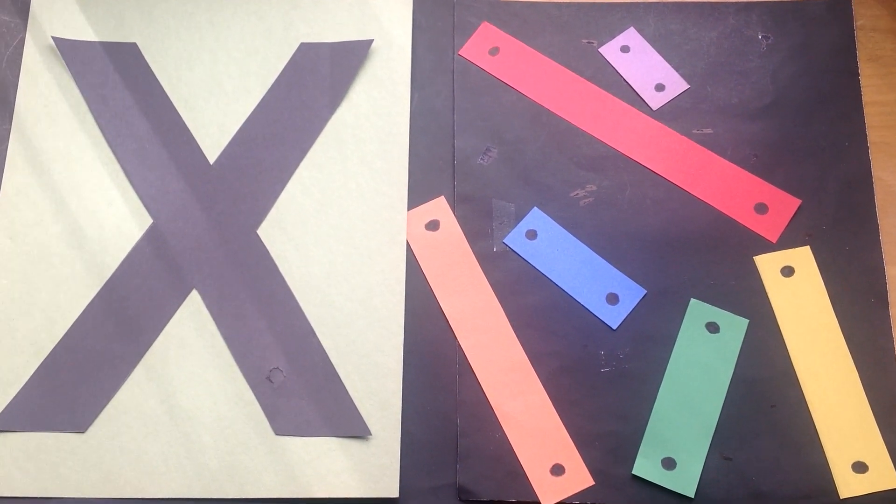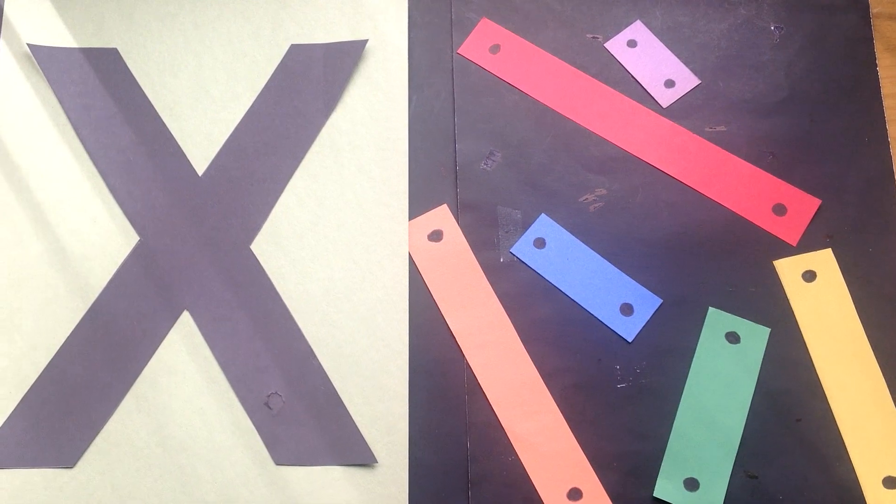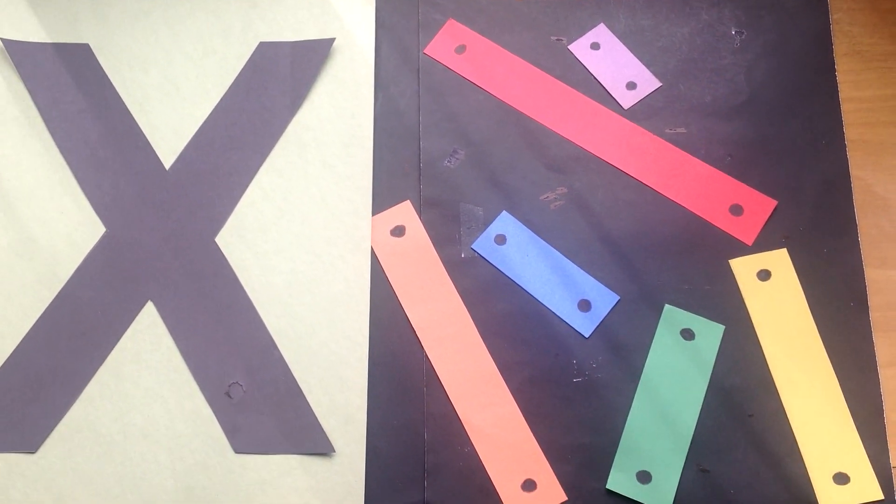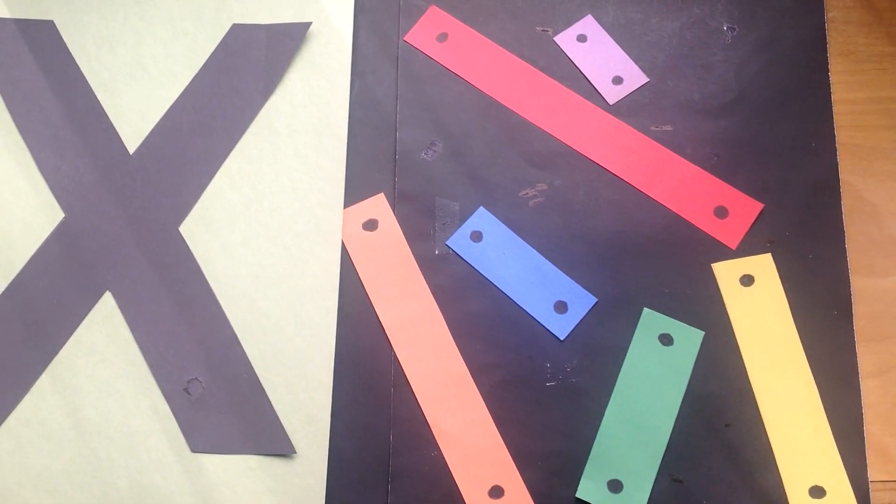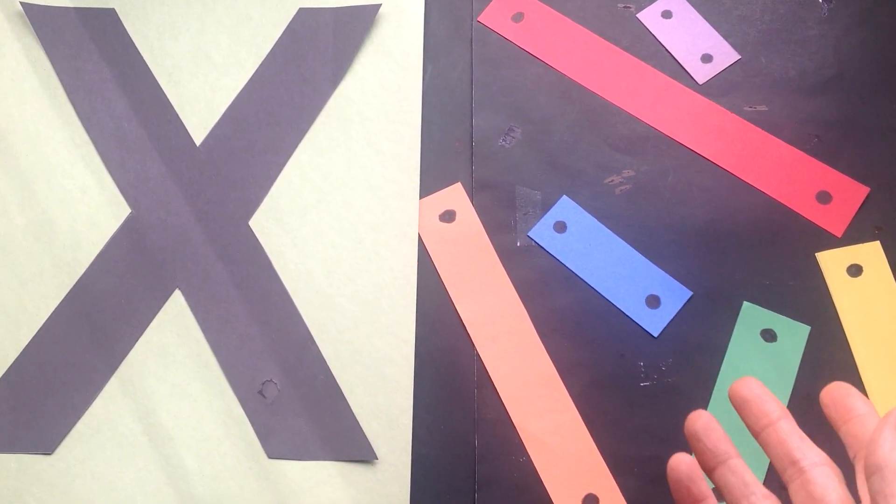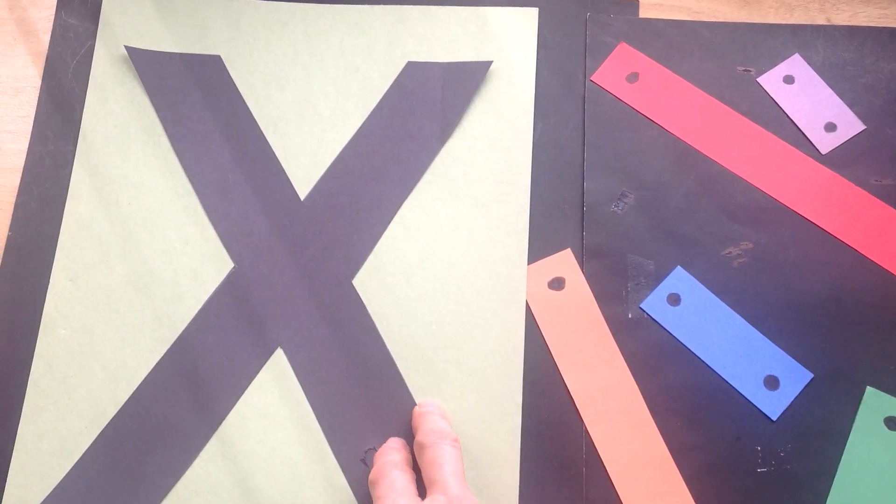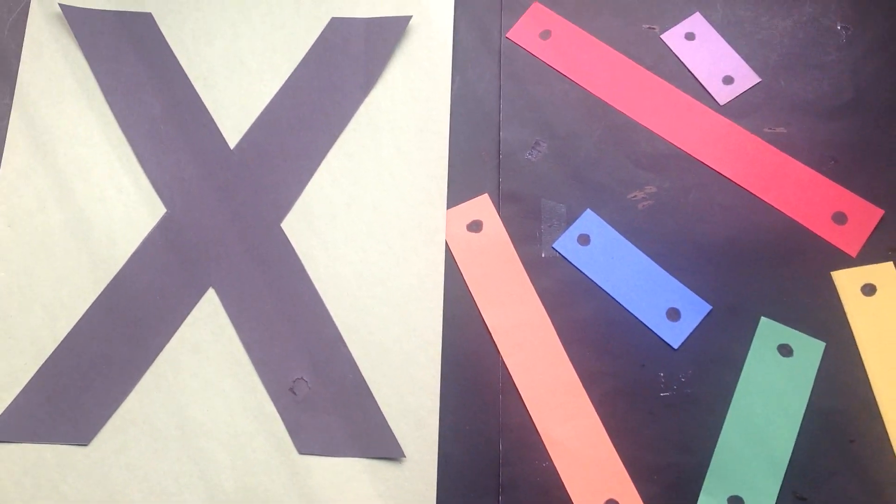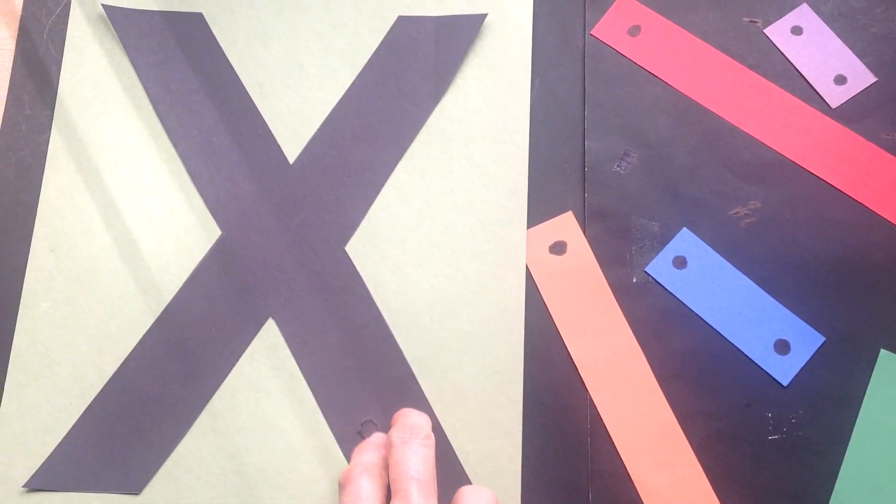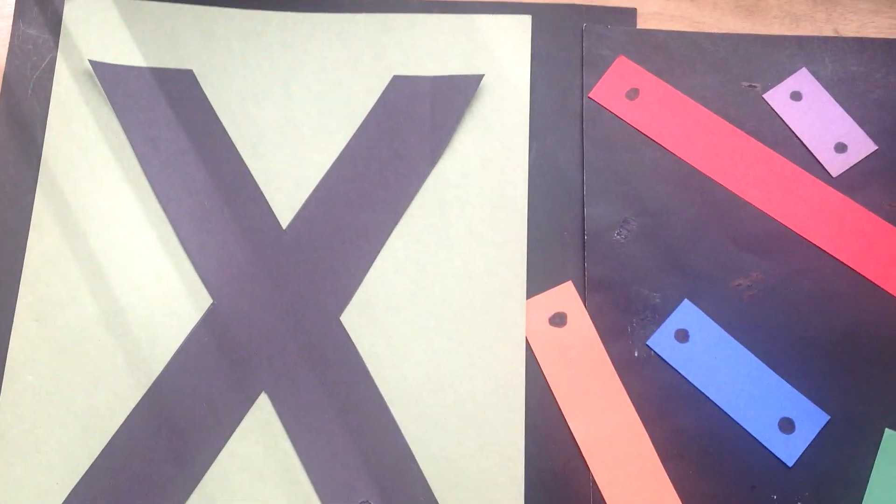Hi boys and girls. Take a look at my letter X. It's X for a xylophone, but take a look at the xylophone. All of the colors came off. All of the chimes need to be put back on our X. Can you help me put the chimes back on from longest all the way up to shortest?